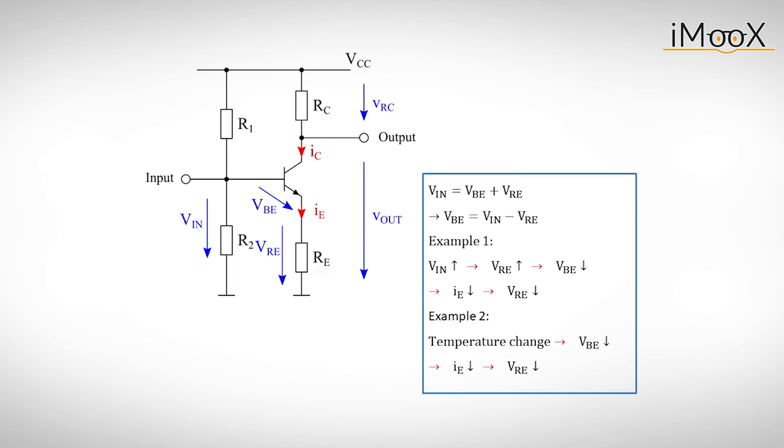Therefore, it is better to add an external emitter resistor, even at the expense of gain.